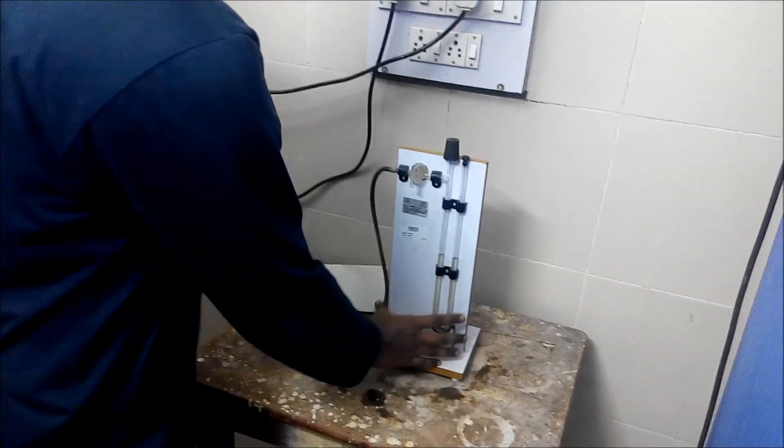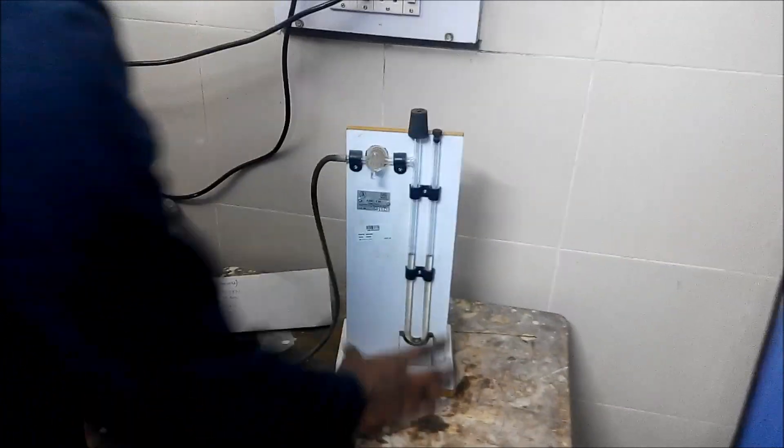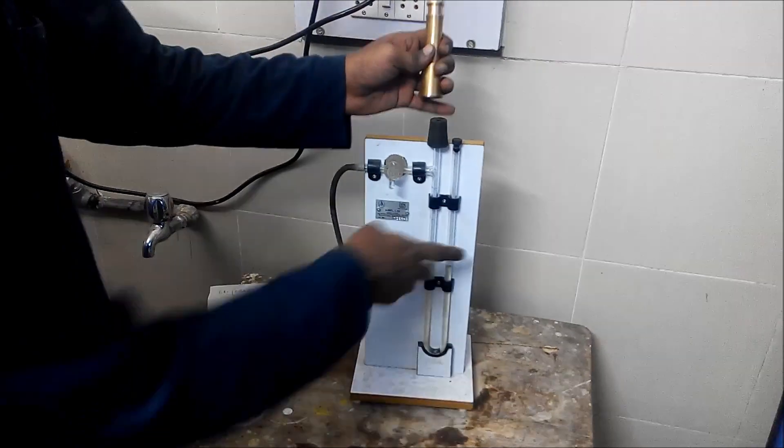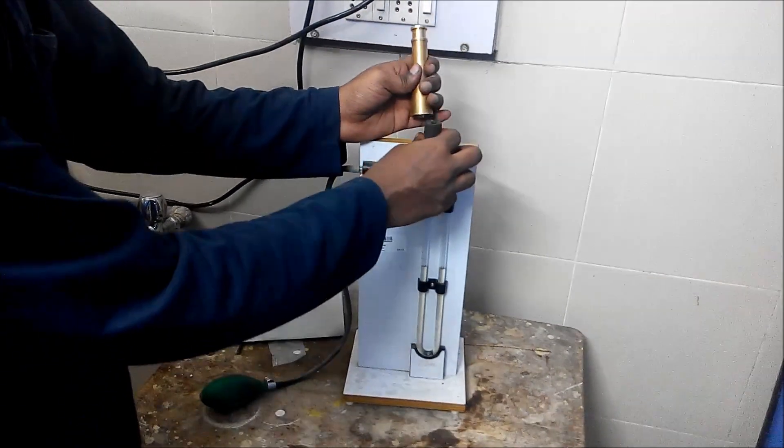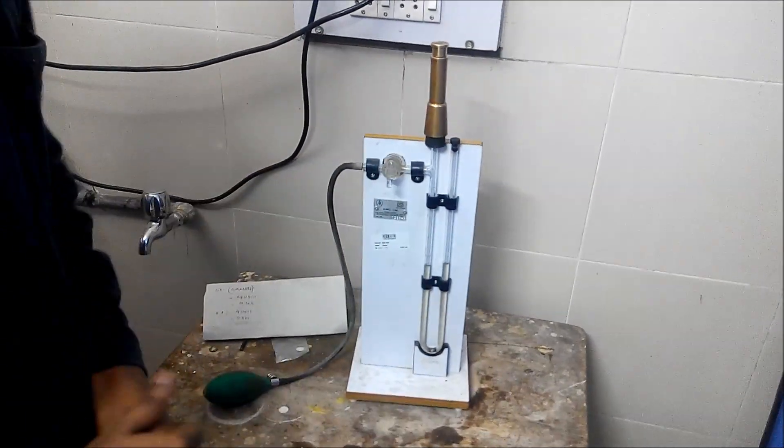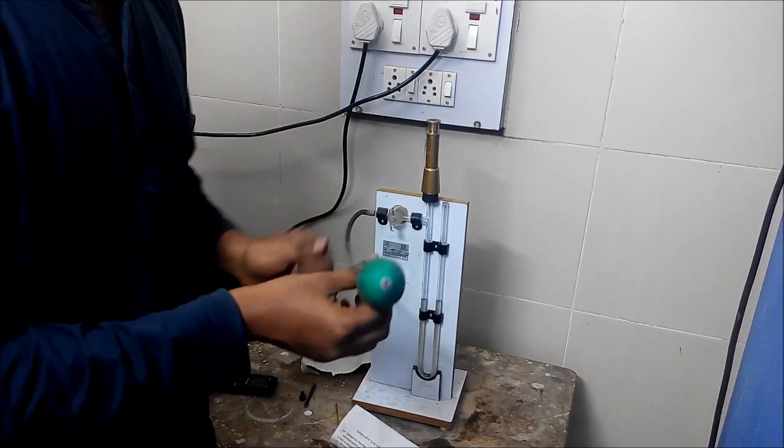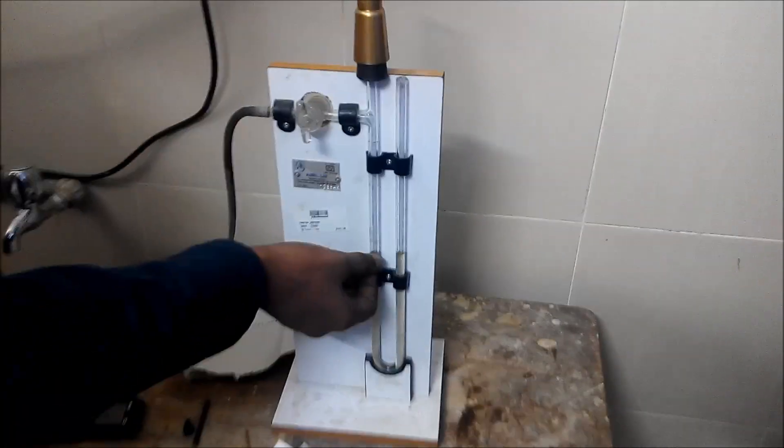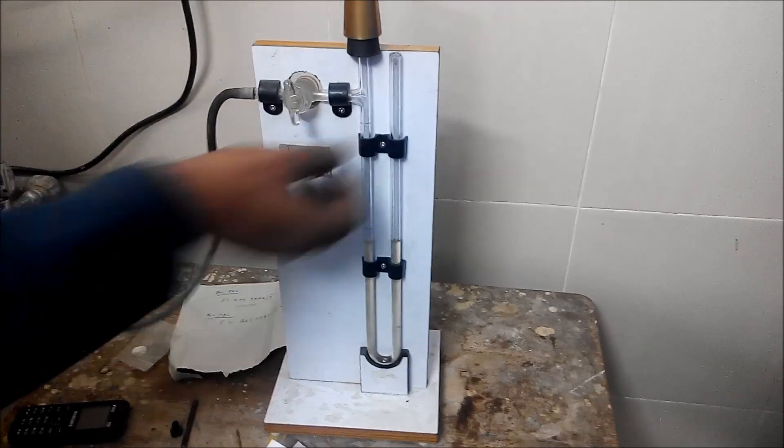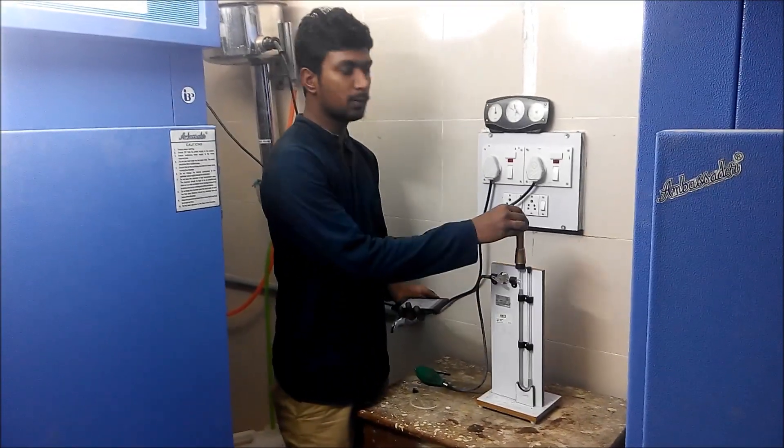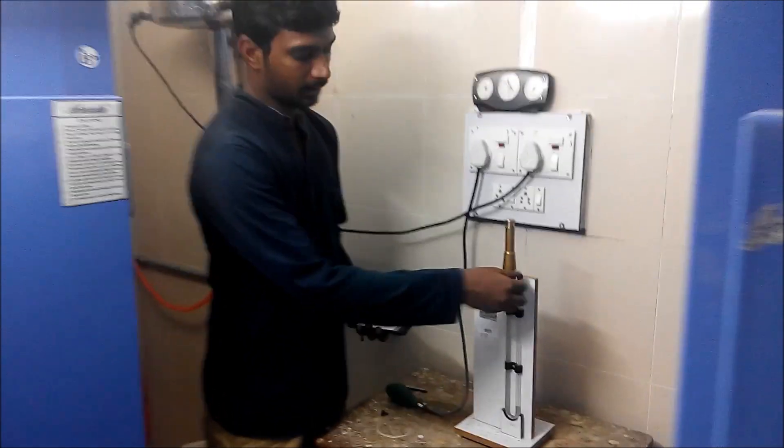Now this is the manometer. We have already discussed about this. And this entire equipment we have connected with U-tube manometer with the help of rubber cord. And this is the rubber bulb. By using this, you can adjust the level of this oil from here to here. After connecting the permeability cell with the manometer, you must remove the plunger and this one.